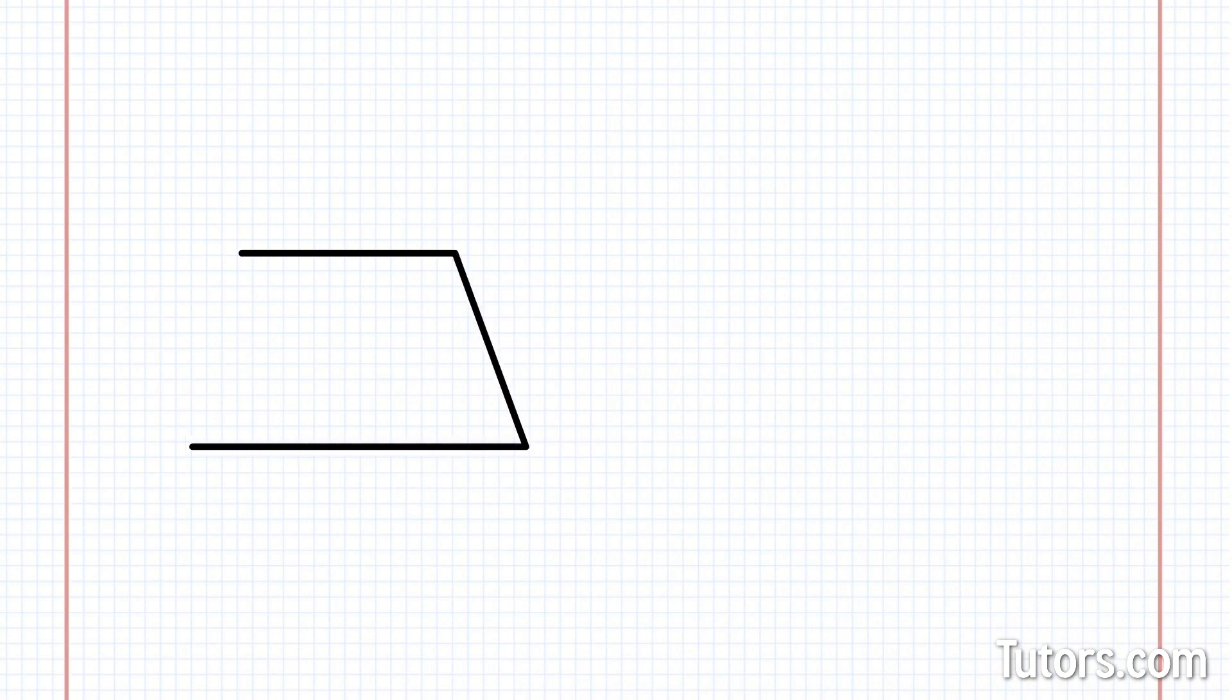To find the area of any trapezoid, start by labeling its bases and altitude. In our trapezoid, label the longer base A, and the shorter base B.